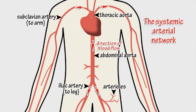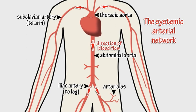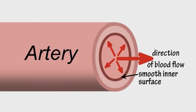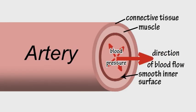The aorta divides into smaller arteries and then into arterioles which carry the oxygen-rich blood to the different parts of the body. The inner surface of an artery is smooth, allowing the blood to flow quickly, and its outer walls are strong and elastic to cope with the pressure of the blood inside.